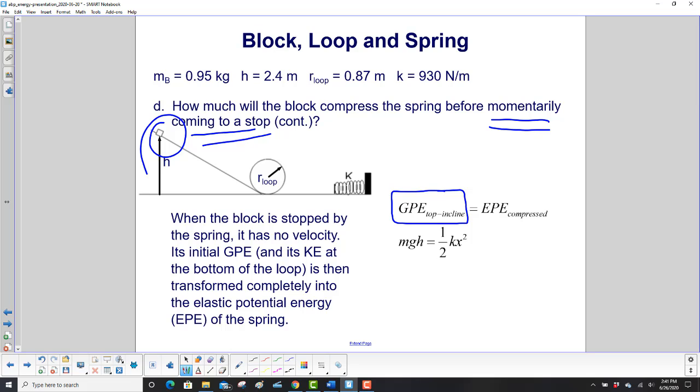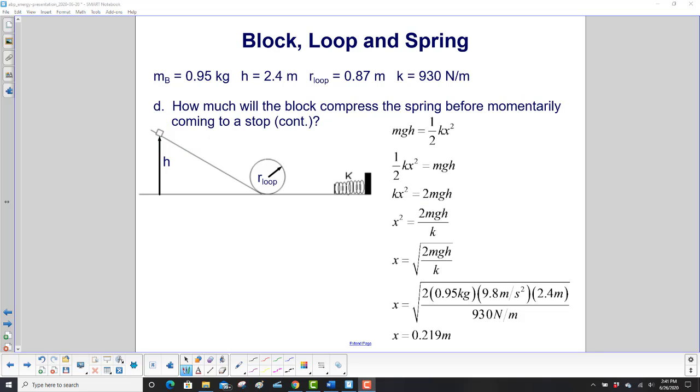Where did all that energy go? Into the maximum elastic potential energy of the spring, EPE. So it's equal to EPE of the compressed spring. Our equation now is mgh, that's the initial GPE there, equals one-half kx squared. That's the EPE for compression.